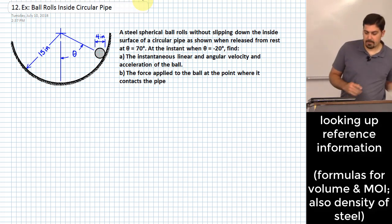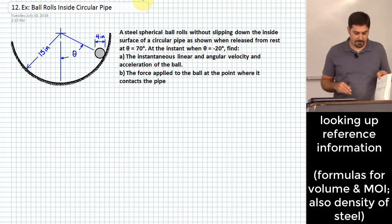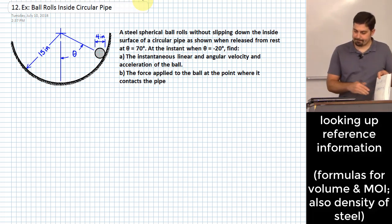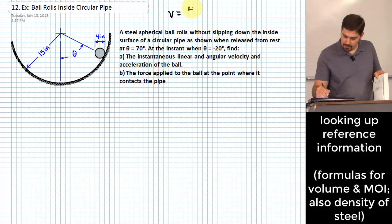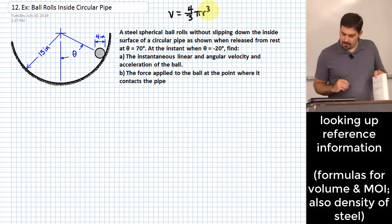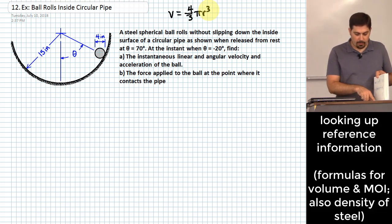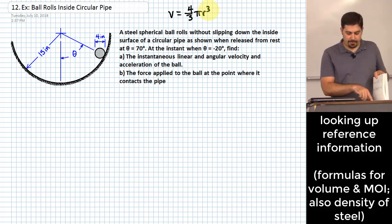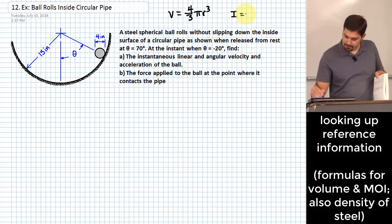The volume of a sphere is four-thirds pi r cubed — it's in the back of your book or on a reference sheet. We'll also need the moment of inertia for a sphere, which is two-fifths m r squared, about the center of gravity.